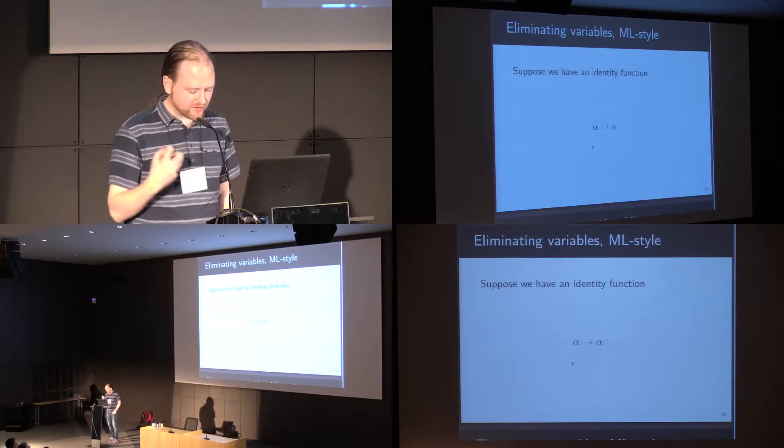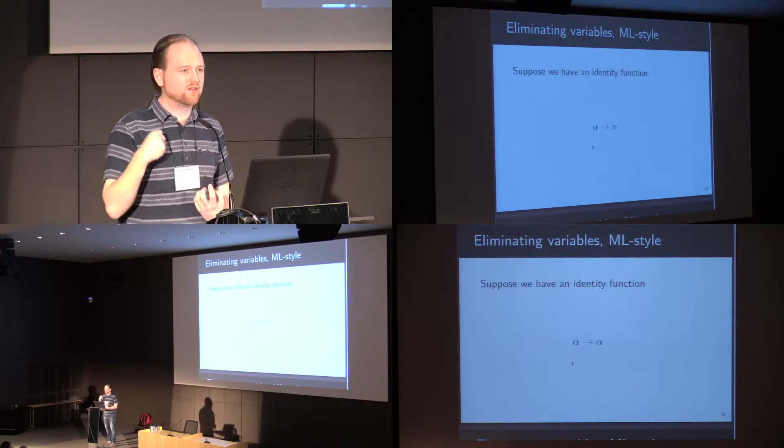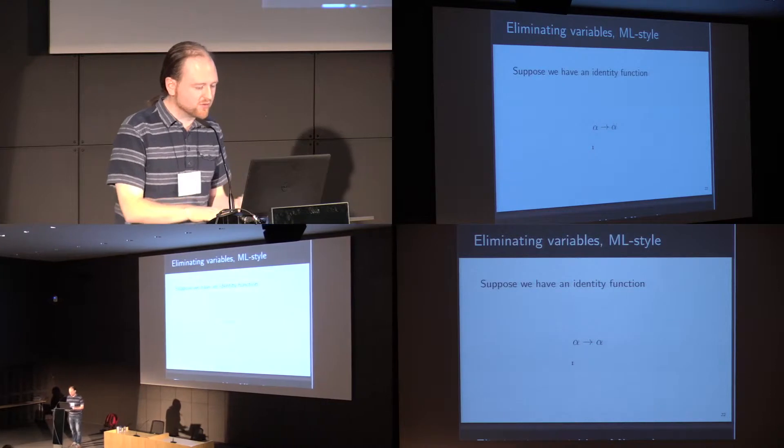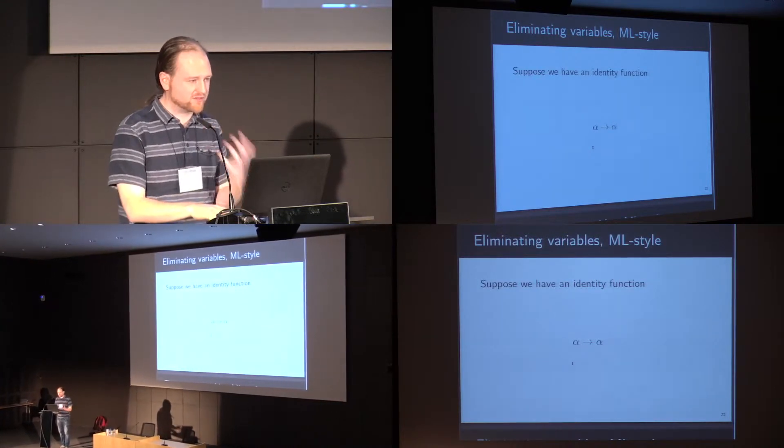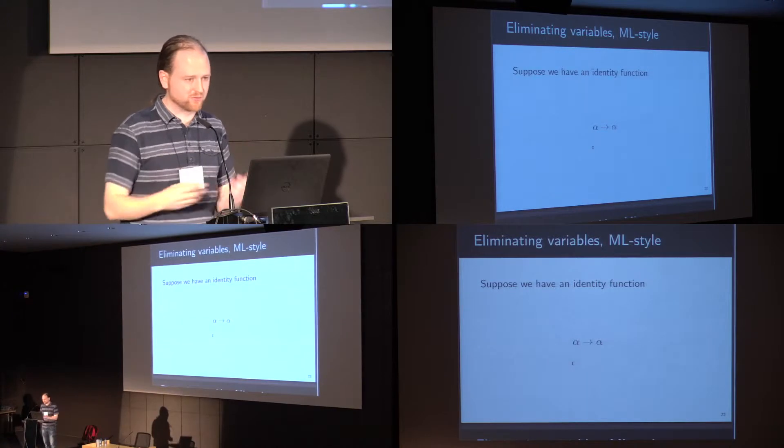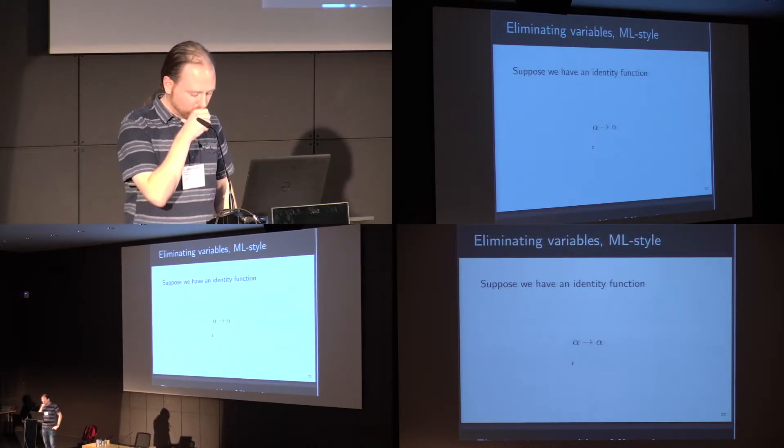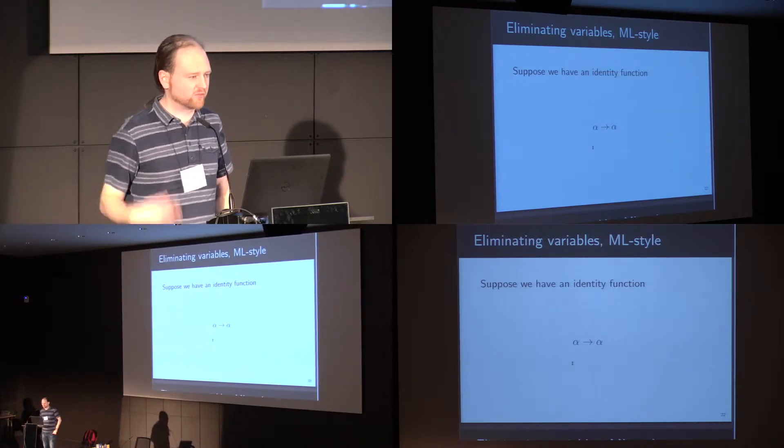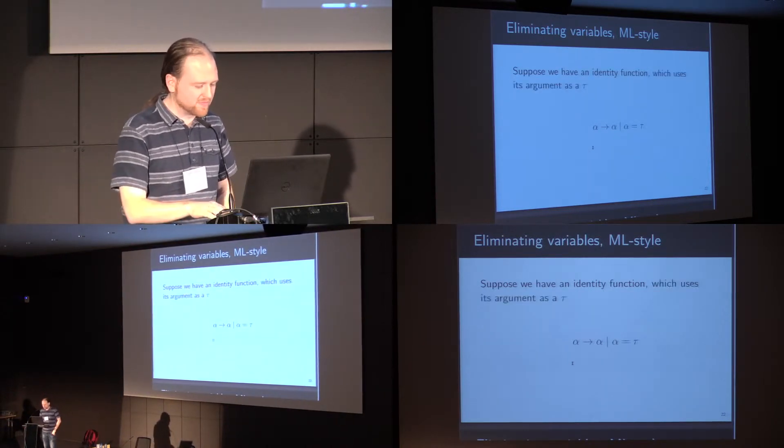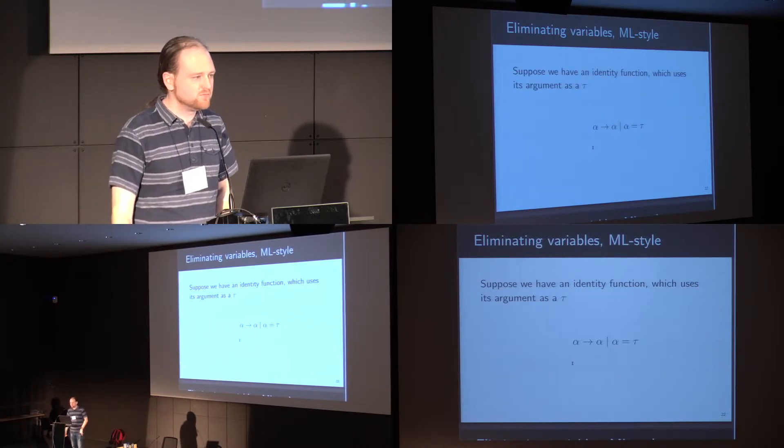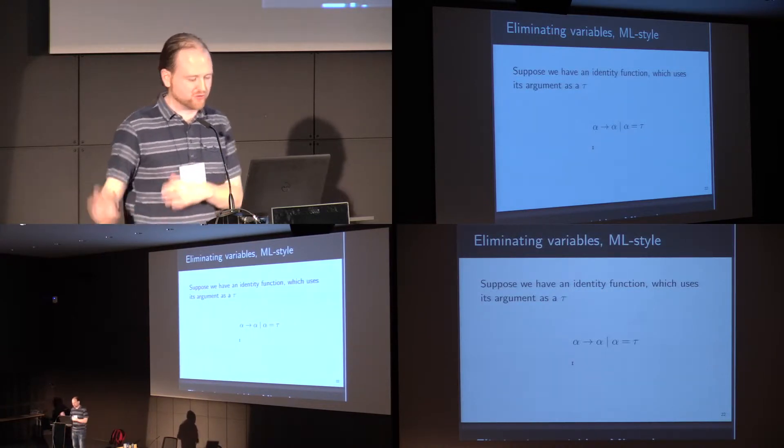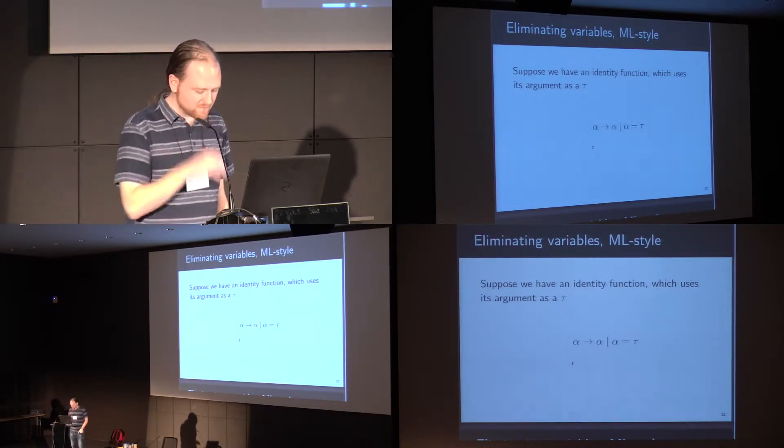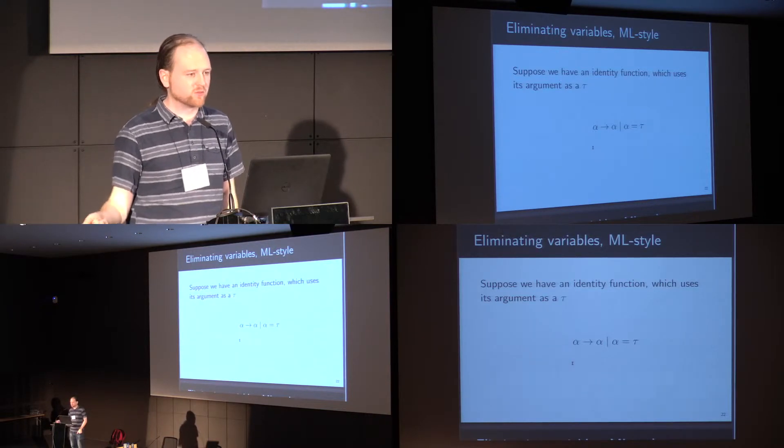So unification is based on substitutions. If we have an identity function alpha to alpha, so it takes its input and returns something of the same type, and we learn a constraint from some part of the system, the unification tells us that alpha must be equal to t. So we've got this function which as well as returning it, also uses its target in some context that requires a t.